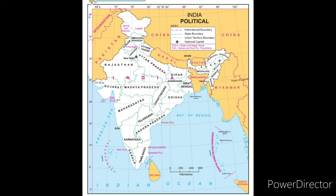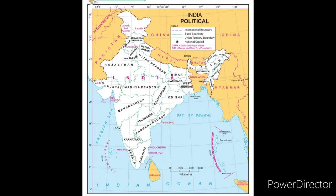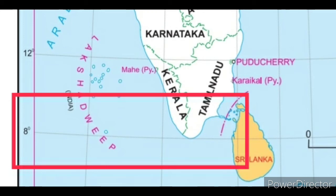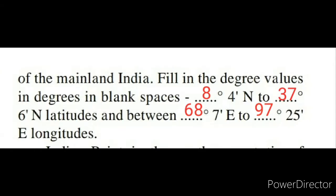Now to fill in the blanks from the map: India's latitude starts from 8 degrees 4 minutes north. Since India is situated in the northern hemisphere, it starts from the bottom going up. India starts from 8 degrees — the border of Tamil Nadu and Kerala — at 8 degrees 4 minutes north, and goes up to Jammu and Kashmir at 37 degrees 6 minutes north. So India's latitude extent is 8 degrees 4 minutes north to 37 degrees 6 minutes north.